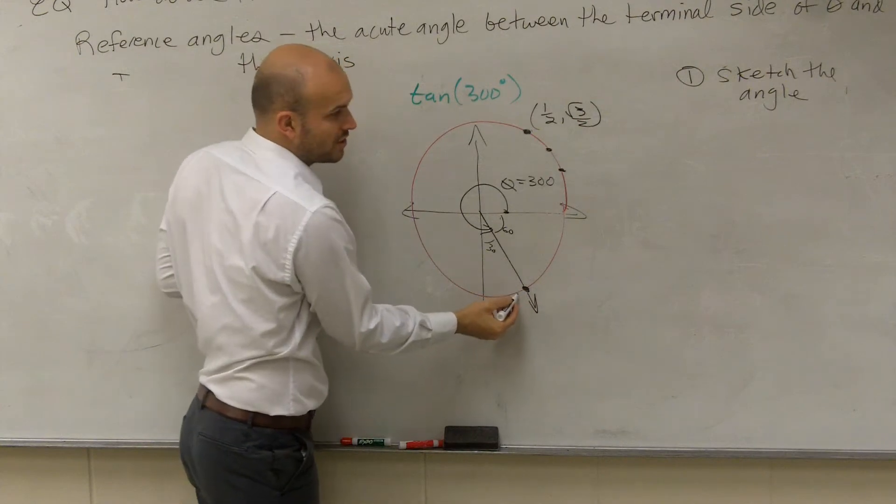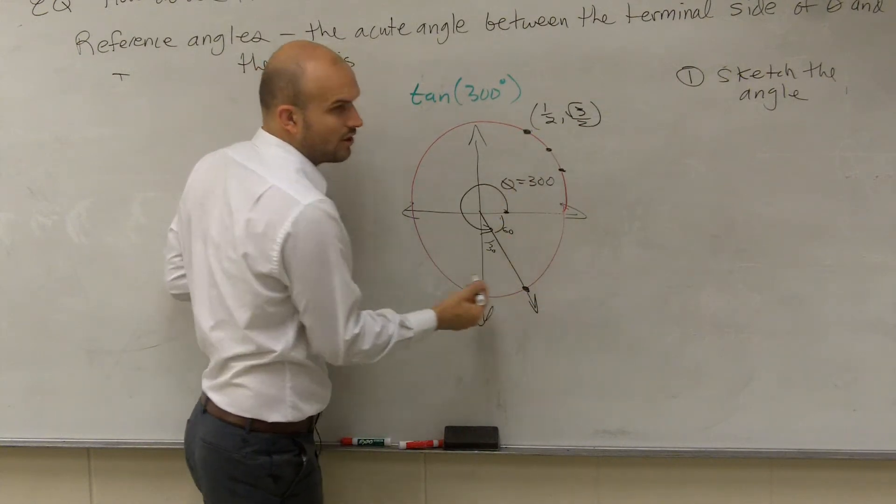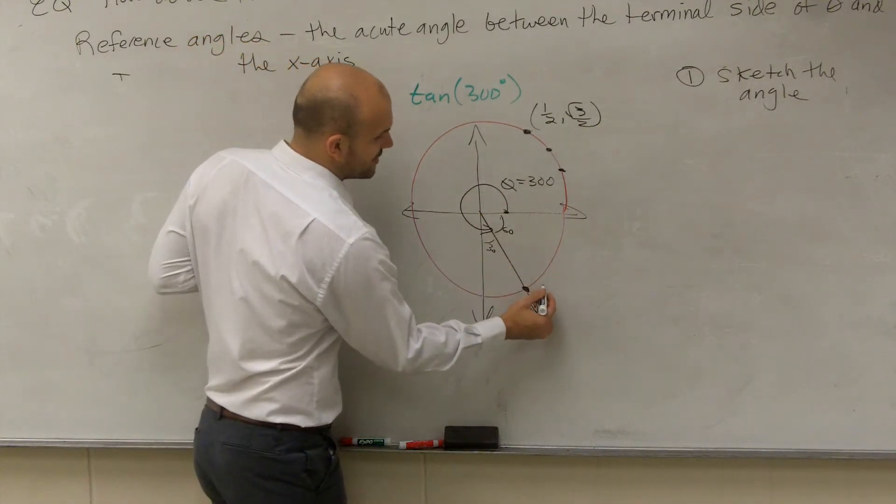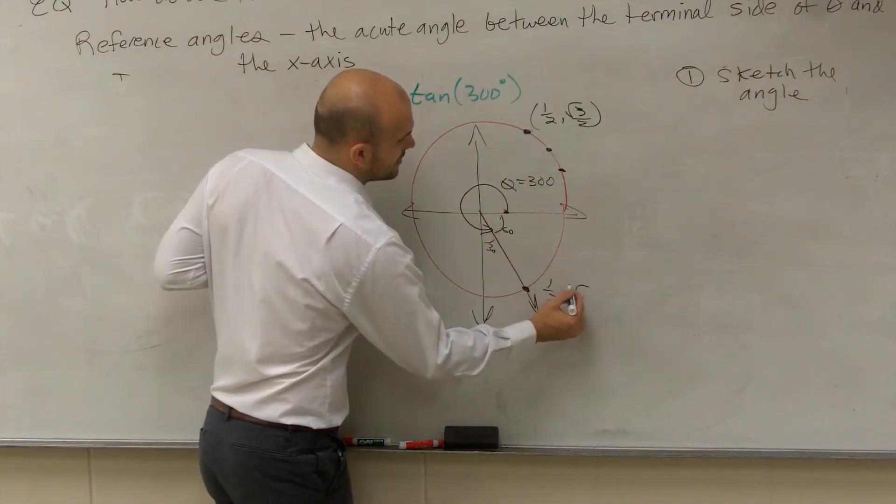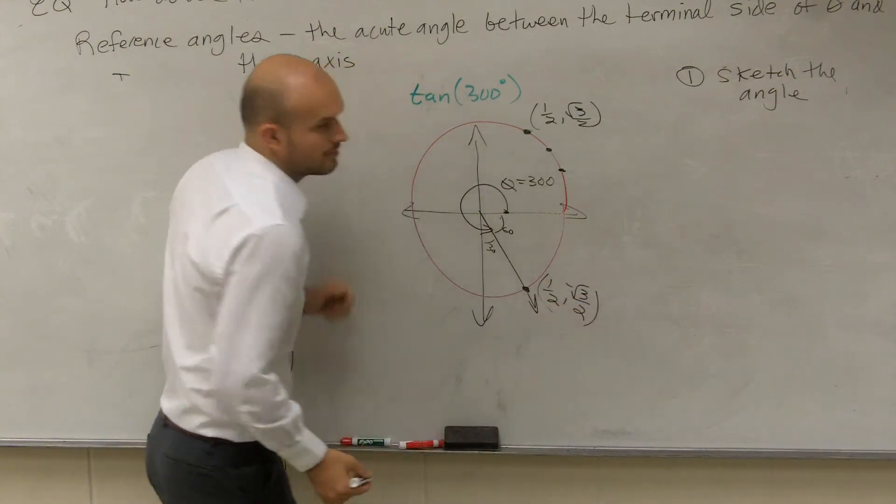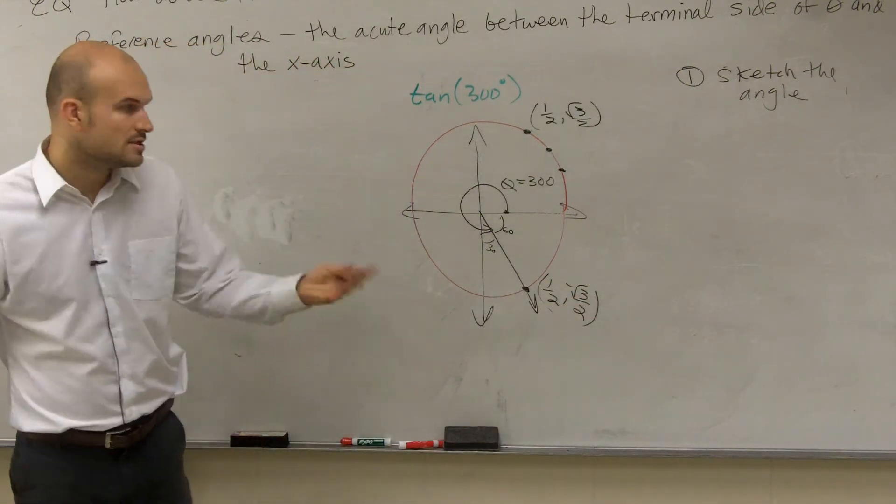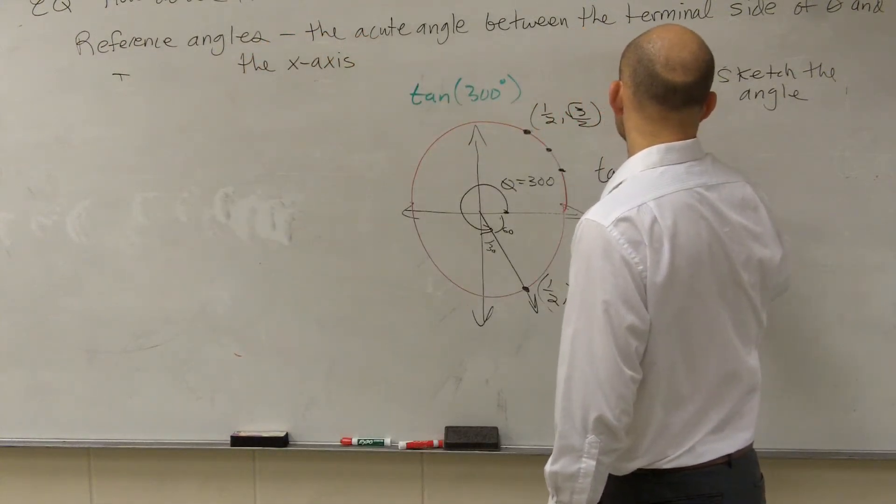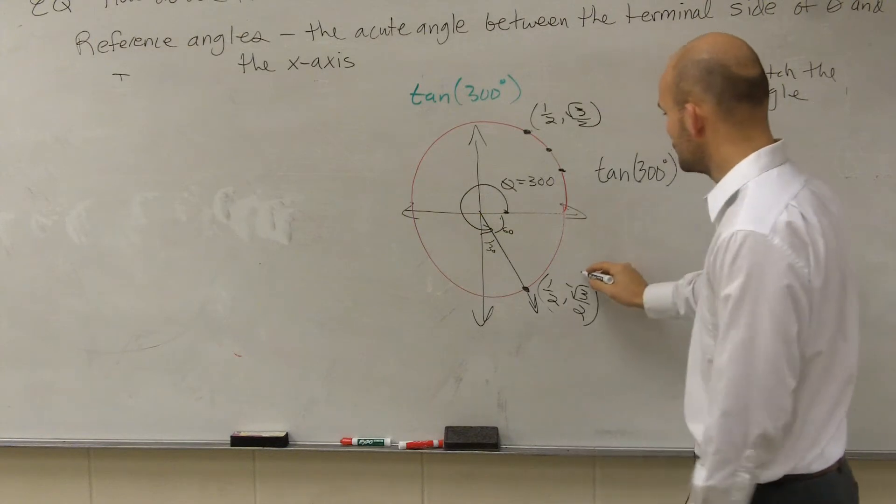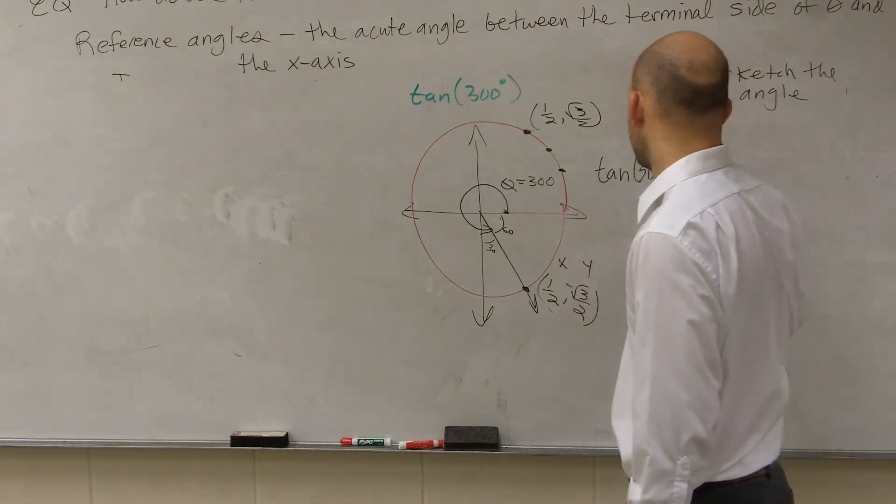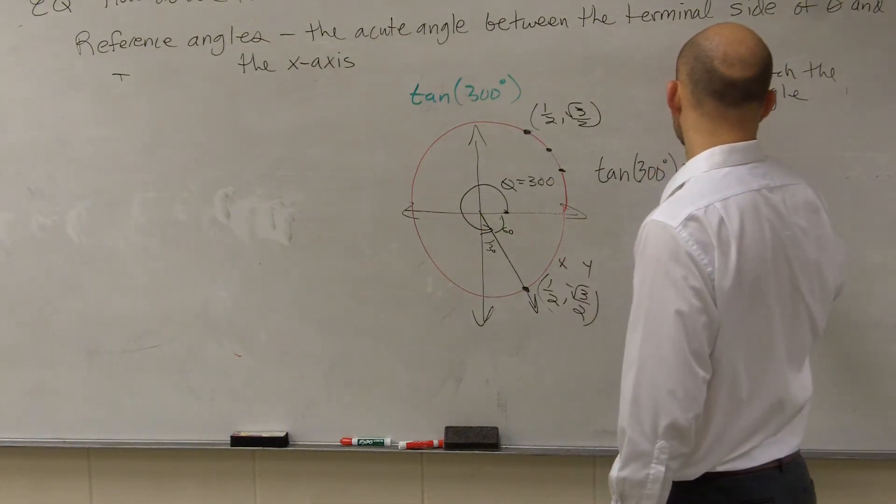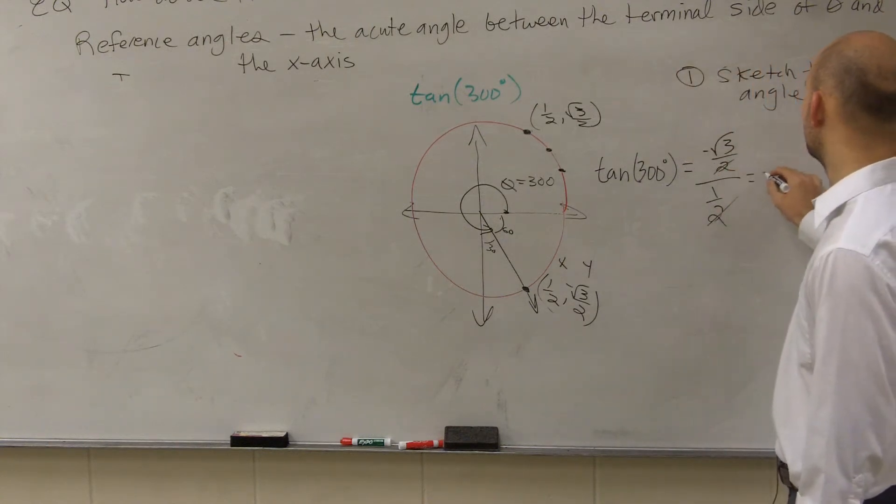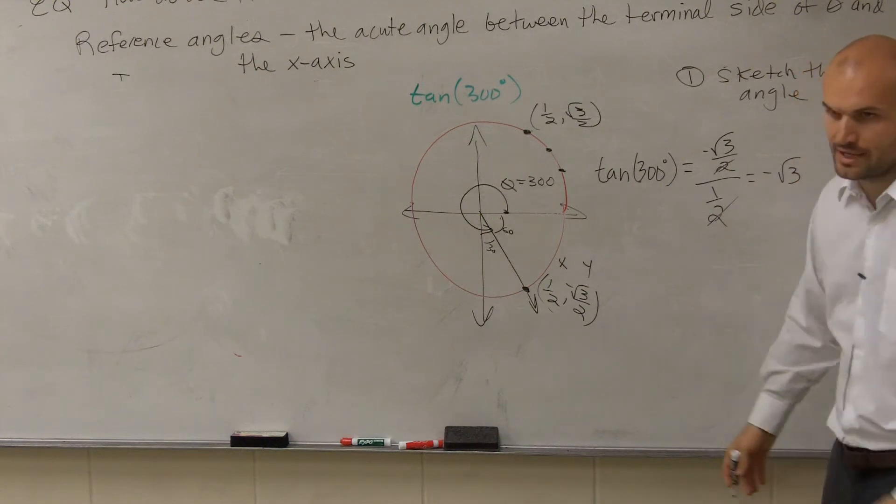Therefore, by knowing my unit circle, I also know that this point, or if I just filled up the unit circle and figured it out, I would know that this one is going to be 1 half comma negative square root of 3 over 2. So therefore, we'd say the tangent of 300 degrees is equal to y over x. So it would be negative square root of 3 over 2 divided by 1 half, where when we go and simplify we get negative square root of 3. That's our answer.